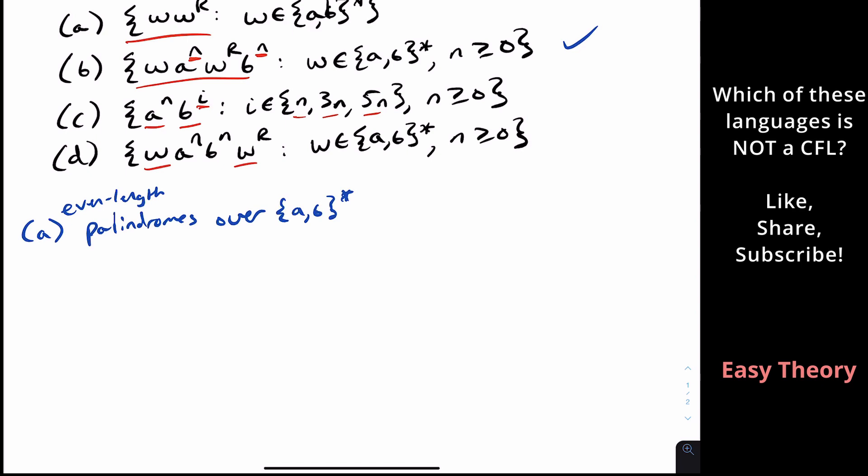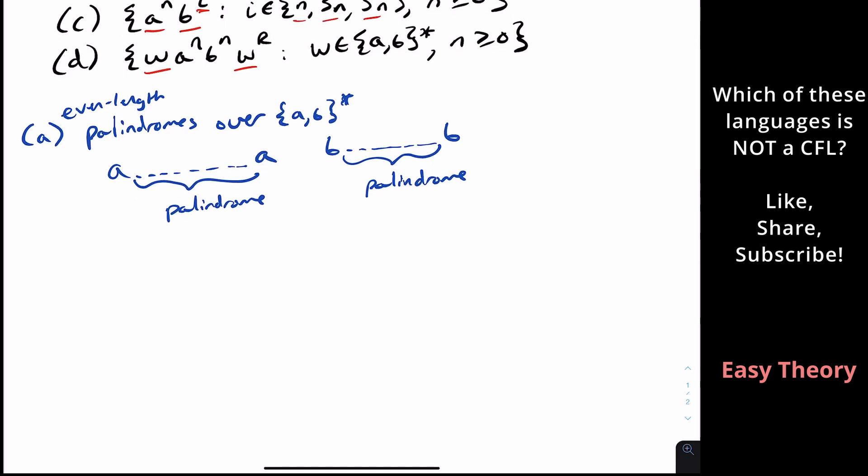Well, how can we make a grammar for this? If we have a palindrome, it must start and end with the same character, and what's in the middle is also a palindrome. So if it starts and ends with an A, the part in the middle is a palindrome. And similarly, if we had a B starting it, the middle of it is also a palindrome.